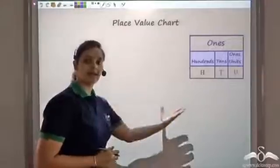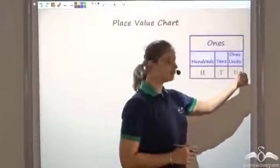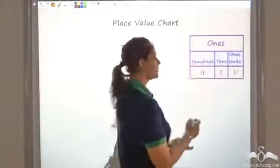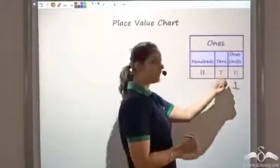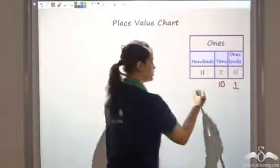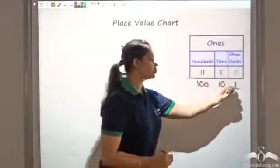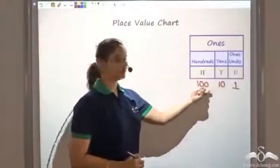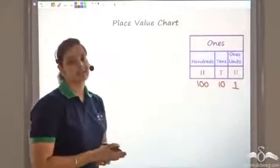If you write down any number, the rightmost digit represents the number of ones, shown by the letter U. The second digit represents tens (T), and the third digit represents hundreds (H). As you move towards the left, each column is 10 times the previous column: 10 is 10 times 1, and 100 is 10 times 10. Hence we call this the base 10 number system.